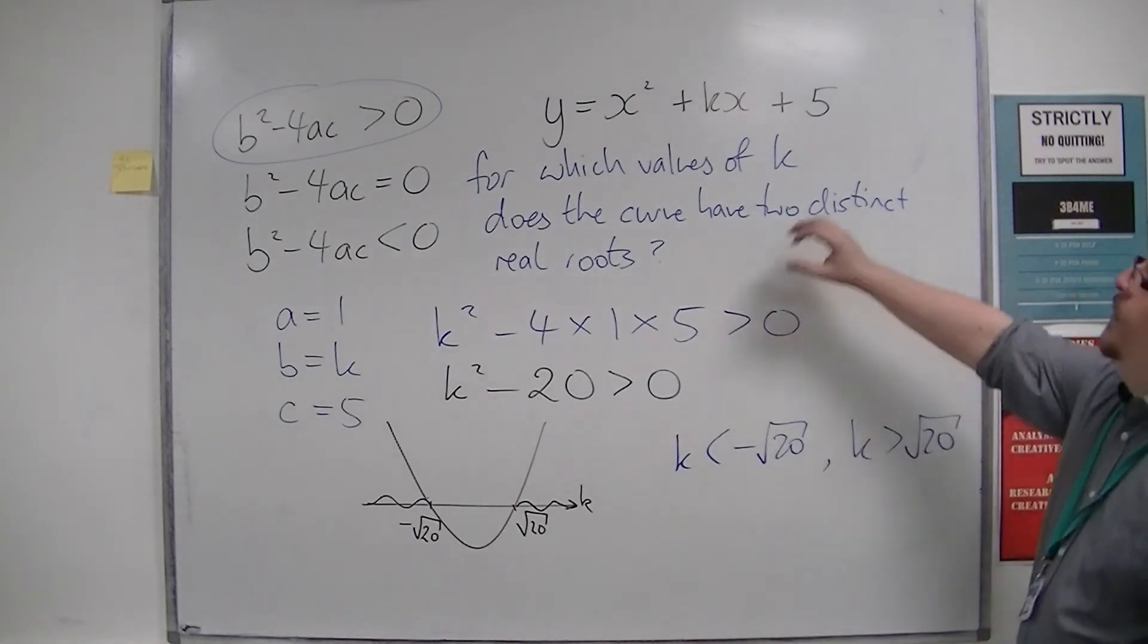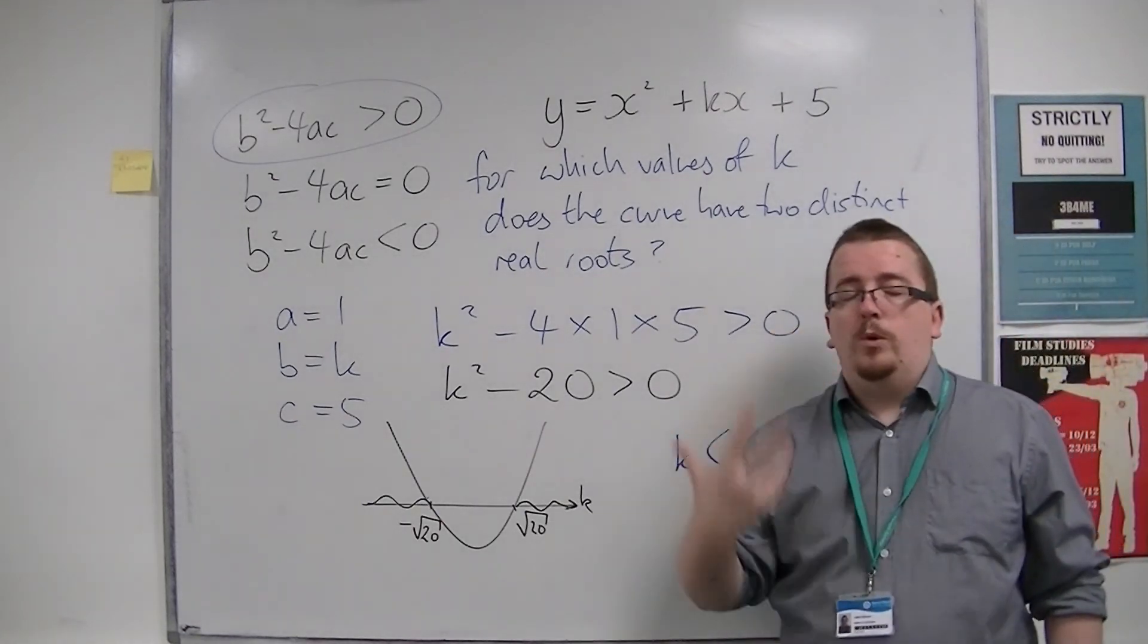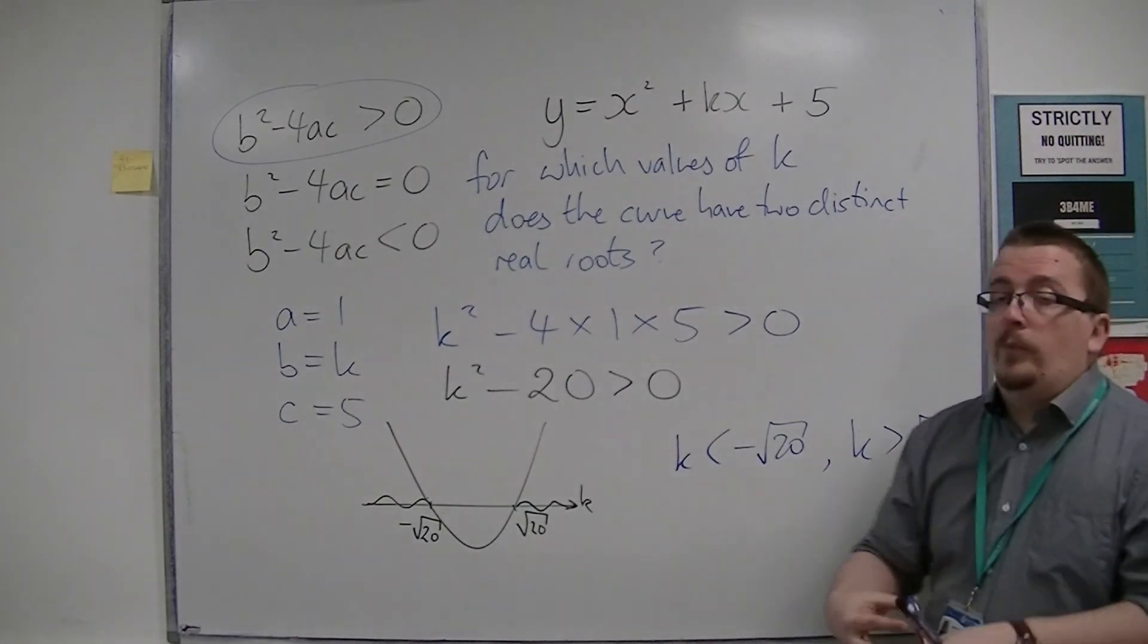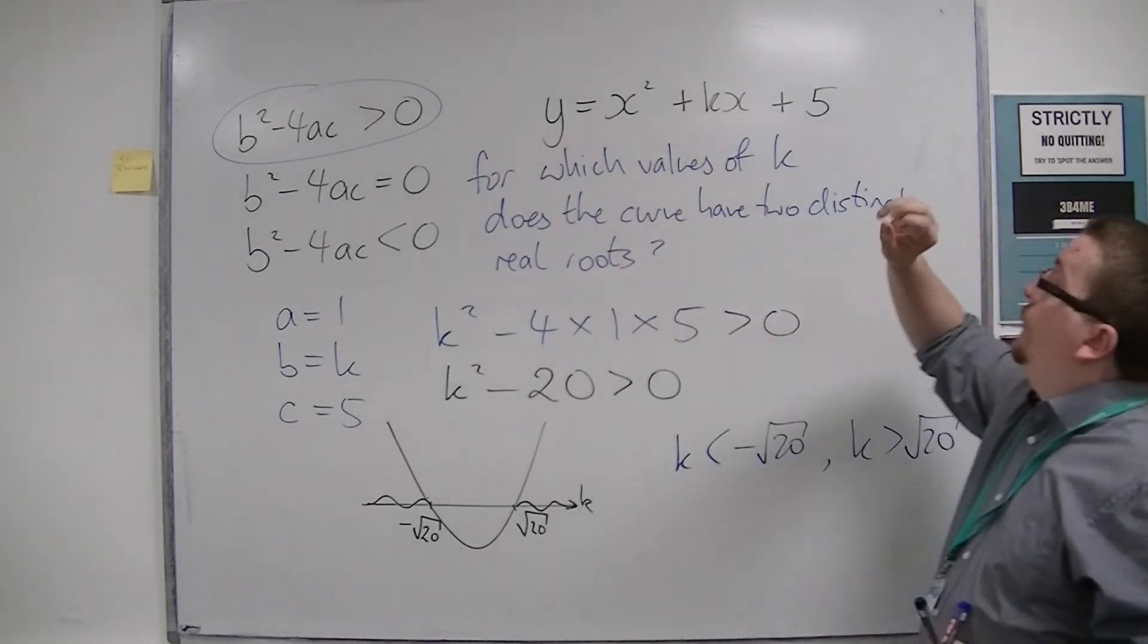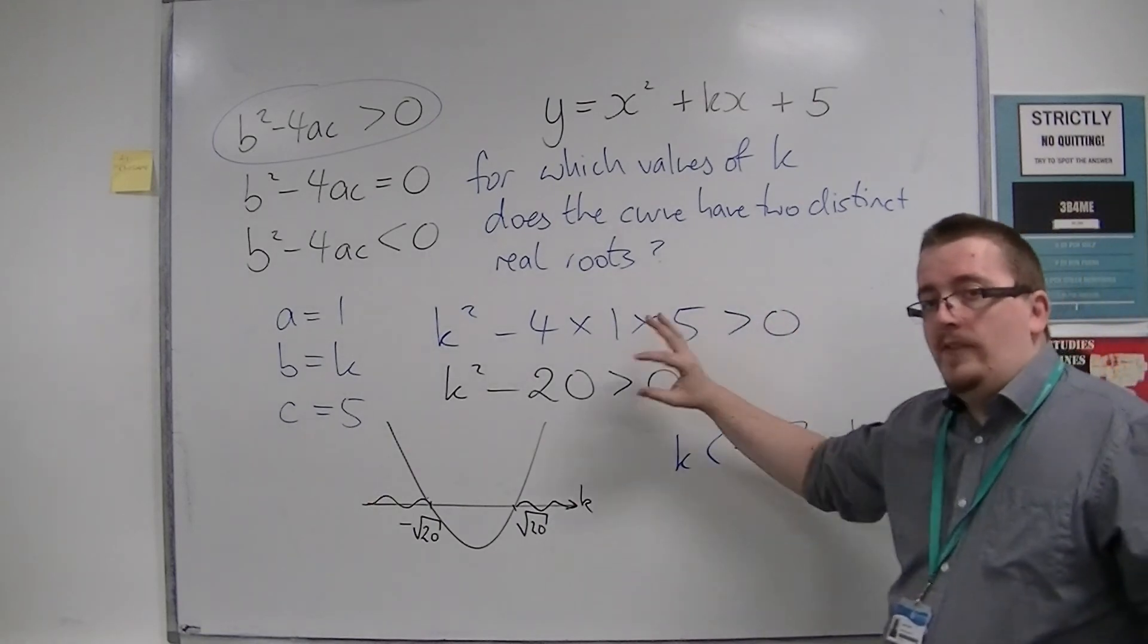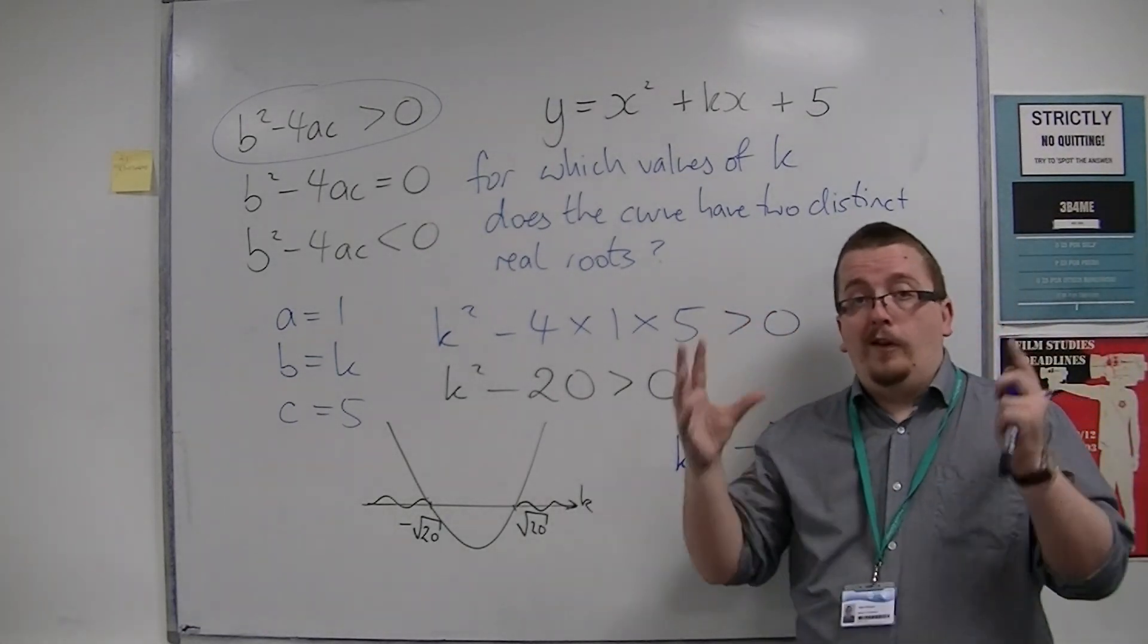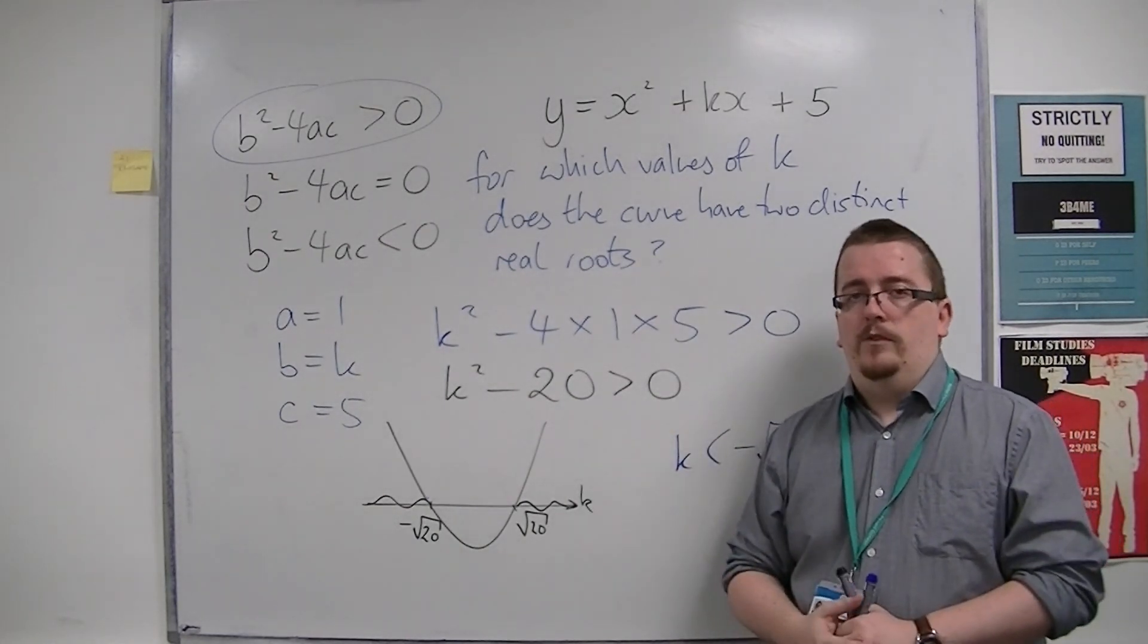So what we're doing is identifying that we're looking at the roots of a quadratic, which means we have to use the discriminant. If we're looking for two distinct real roots, we know the discriminant must be greater than zero. Then we can substitute the values into that and form a quadratic inequality that we must then solve. There's a number of steps to this type of problem, and this is the simplest kind. We're going to ramp up the difficulty in the next few videos.